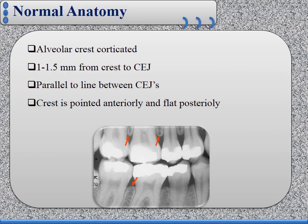Normal anatomy of the periodontium. The alveolar crest should be corticated, and the periodontium should be about 1 to 1.5 mm from the crest to the cementoenamel junction of adjacent teeth. The alveolar crest should be pointed anteriorly and flat posteriorly. As we see in this radiograph, the arrows indicate the alveolar crest, which is flat in the posterior regions and pointed in the anterior region.